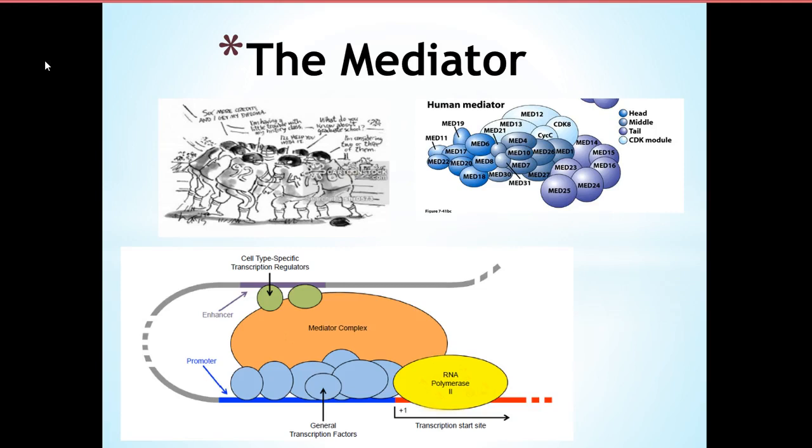All eukaryotic cells have mediators, and some mediators are even more specific. So I just want you to see how it really just covers the RNA polymerase II. Like, it doesn't just go near it. It completely encapsulates it.